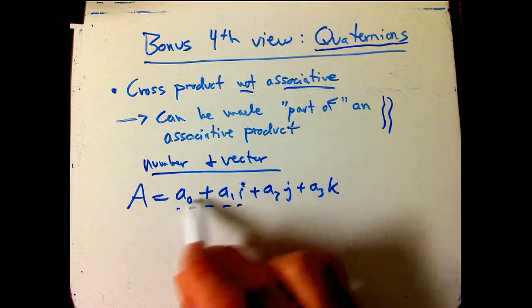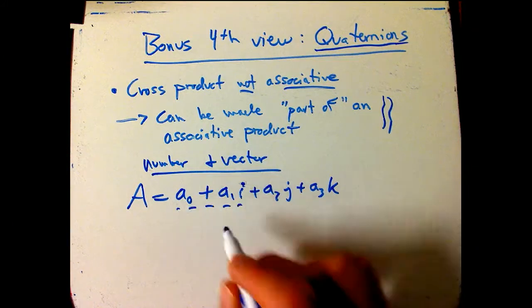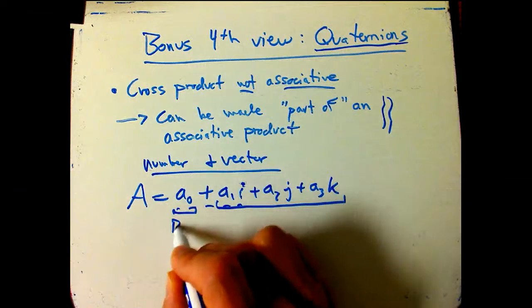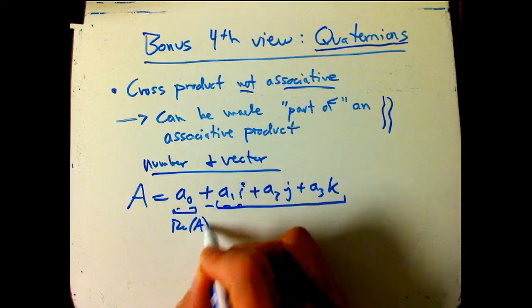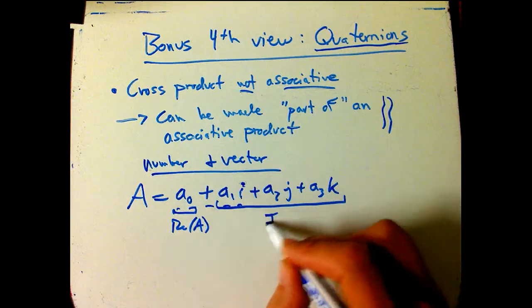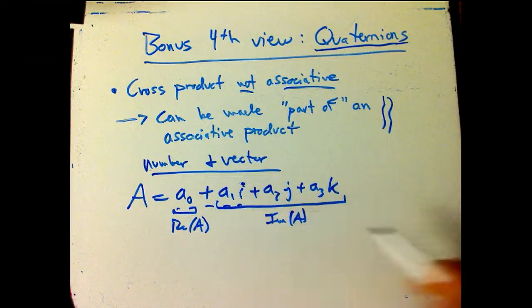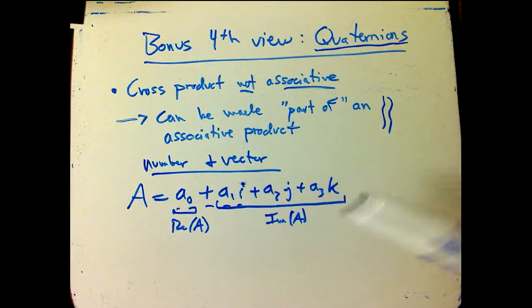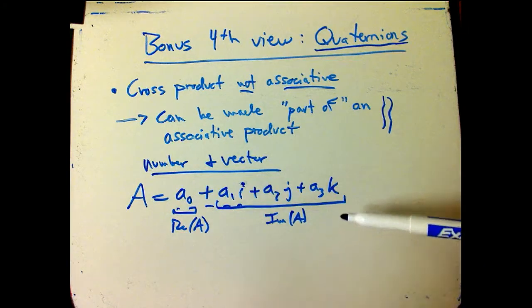This guy looks an awful lot like a complex number, real plus imaginary part. In fact, we're going to take that and run with it. We're going to say this is still the real part, real of A, and this guy is the imaginary part of A. So we're going to use those analogies both to vectors i, j, k, and to real and imaginary, complex numbers throughout.